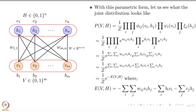If the energy is high, the probability is low. If the energy is low, the probability is high, because of the negative sign: it is E raised to the minus of the energy. So high energy means low probability and low energy means high probability.